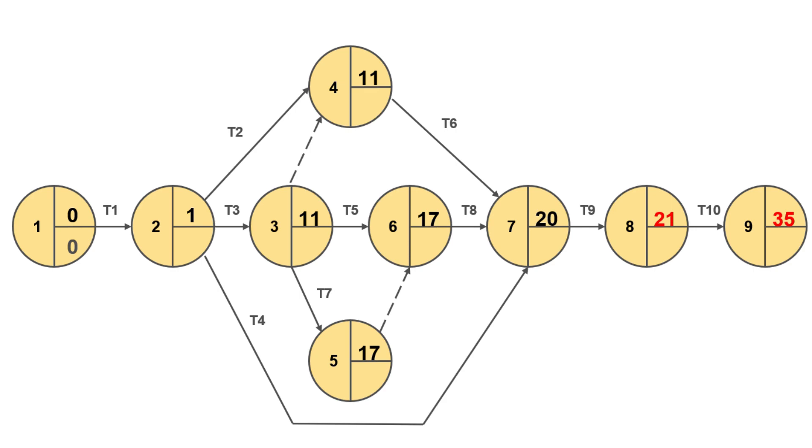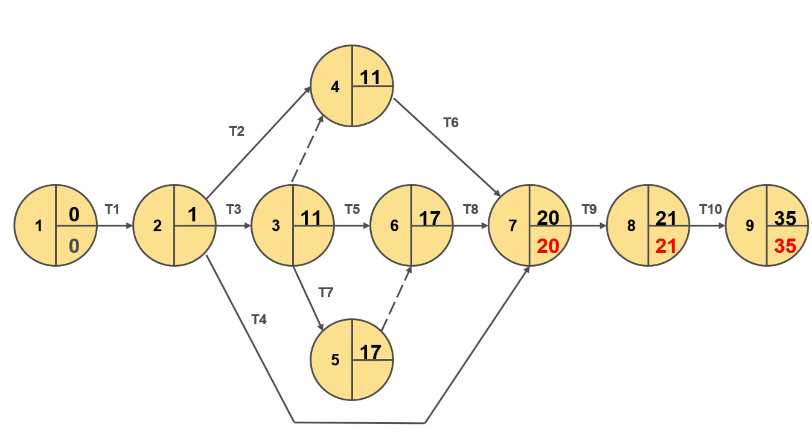Finally, we compute the ESTs of nodes 8 and 9 like so, and that completes the EST calculations for all 9 nodes. Now we move on to calculating the LFTs of the 9 nodes starting with the end node. We start by copying the EST of the end node as the LFT like so and work backwards to calculate the LFT of node 8. To refresh, LFT of node 8 is calculated by deducting the duration of task 10 from LFT of node 9. So it's 35 minus 14 which is 21.